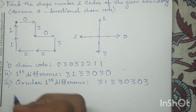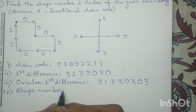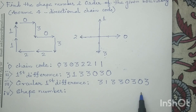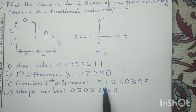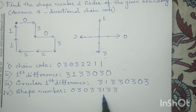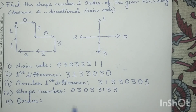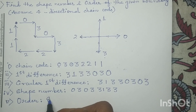Next we determine the shape number, which is defined as the minimum magnitude of the circular first difference. The smallest magnitude of this circular first difference is 0 3 0 3 3 1 3 3, so this is the shape number of this boundary. To determine the order, count the number of digits in the shape number: 1 2 3 4 5 6 7 8 — the order is 8.